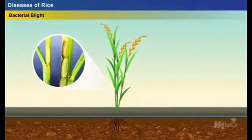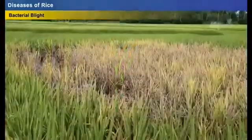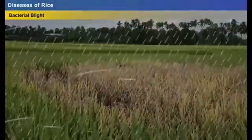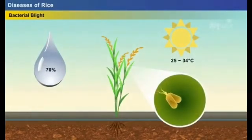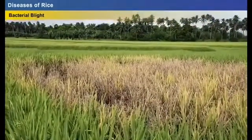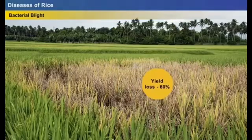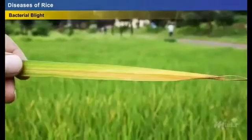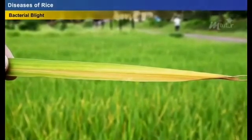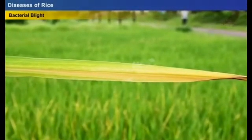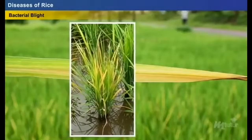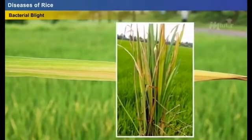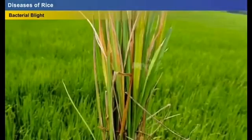After the appearance of initial lesions, the bacteria ooze and spread to other plants through rain or wind. An atmospheric temperature of 25 to 34 degrees Celsius and relative humidity above 70 percent is desirable for growth of these bacteria. The loss of yield is anticipated to be over 60 percent when crops are affected by bacterial blight. At the initial stage of infection, water-soaked streaks appear near the leaf tip and margins, gradually transforming into yellow and straw-colored stripes with wavy edges. At the kresek phase, leaves turn grayish-green, roll up, and later wither, and finally the entire plant dries or dies.